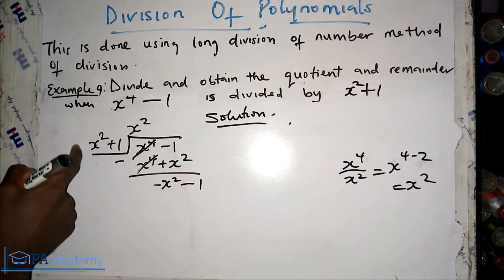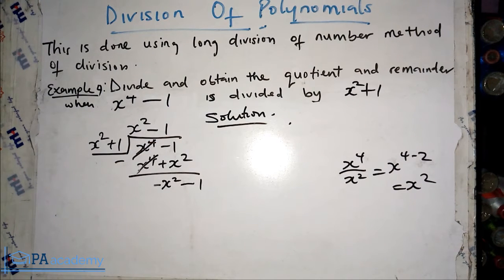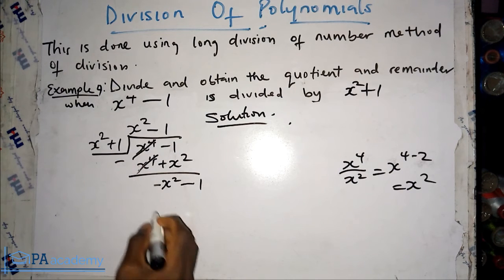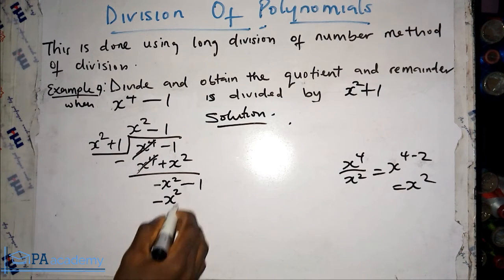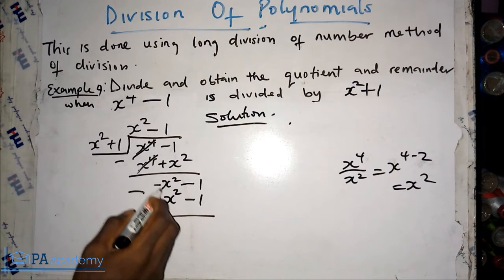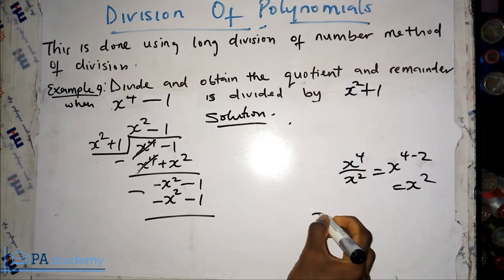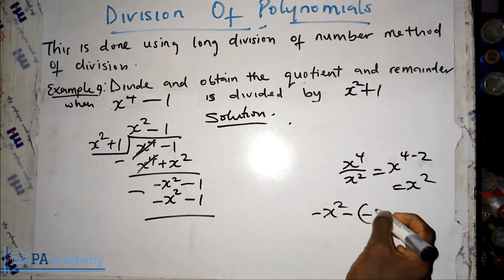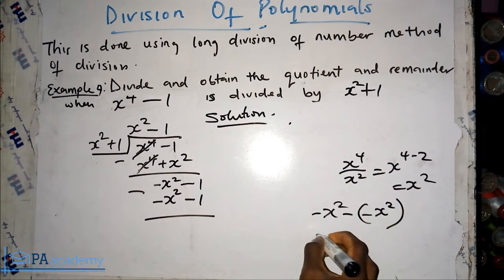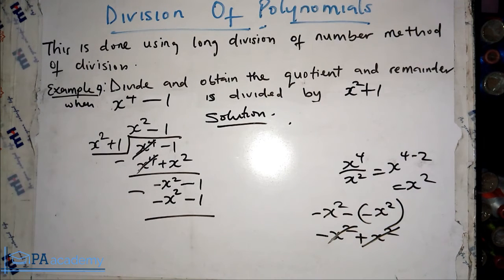Now we divide minus x² by x², which gives us minus 1. We add minus 1 to the quotient and multiply the divisor: minus 1 times x² gives minus x², and minus 1 times plus 1 gives minus 1. Subtracting: minus x² minus minus x² gives zero, and the constants cancel to zero as well. If the subtraction is confusing, you can write it out for clarity.